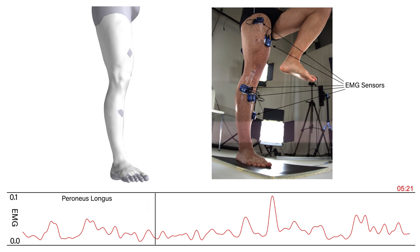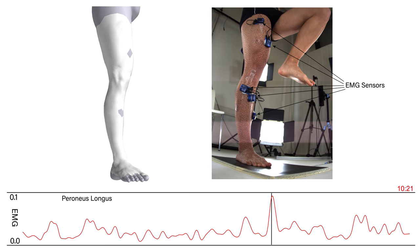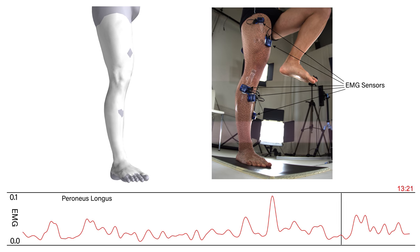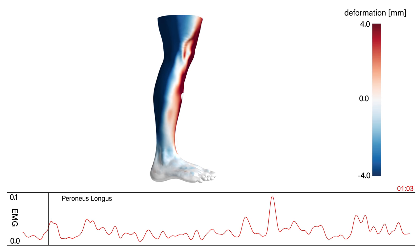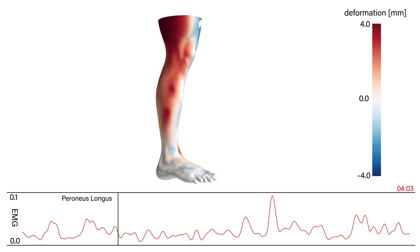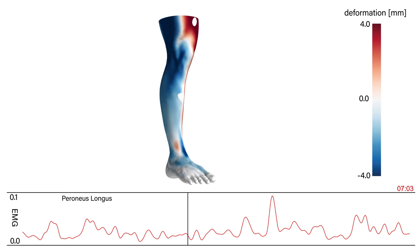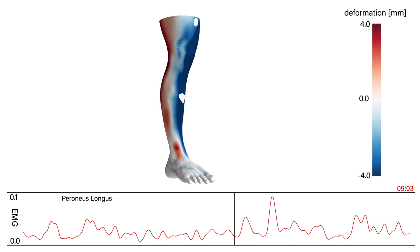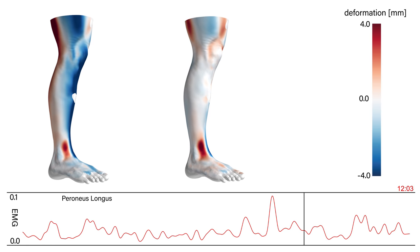In this case, the activity of peroneus longus is shown. These sensors are synchronized with the visual data. Here we show the deformation of the skin surface during the one leg stance. Note that most of the deformation results from motion of the bones. These are subtracted using a post-normalization step.